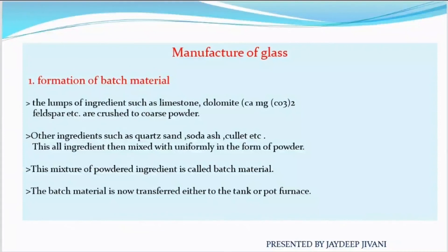Other ingredients such as quartz, sand, soda (Na2CO3), and cullet — meaning broken glass pieces — are already in powder form and are uniformly mixed. So limestone, dolomite, feldspar, soda, cullet, and sand are all mixed together as base material. This mixture of powder ingredients is called the batch material.